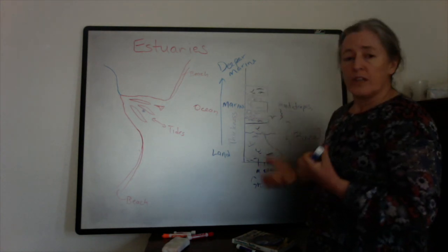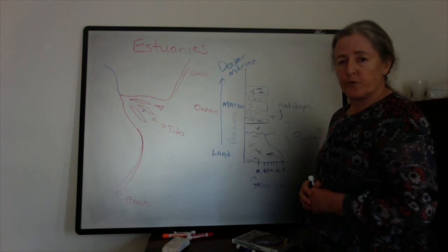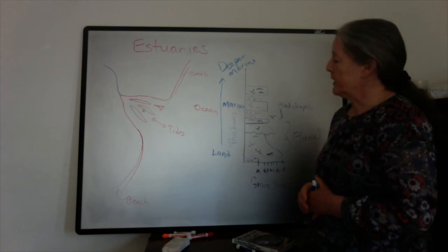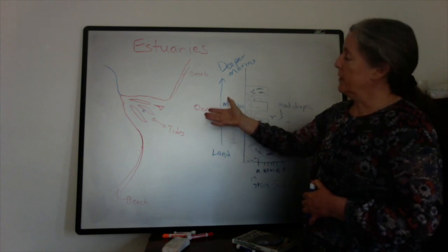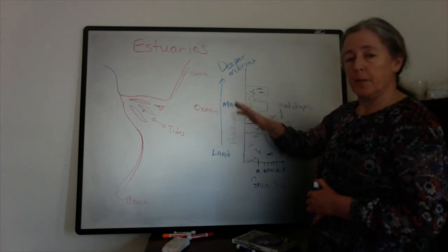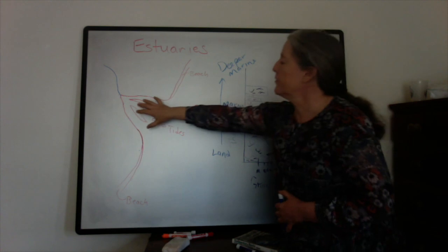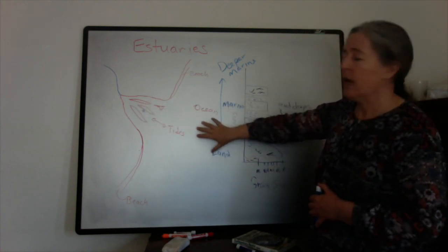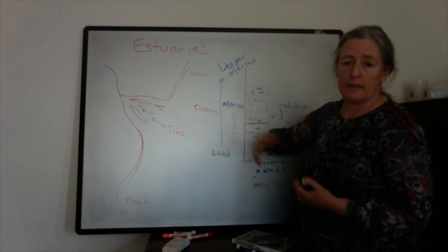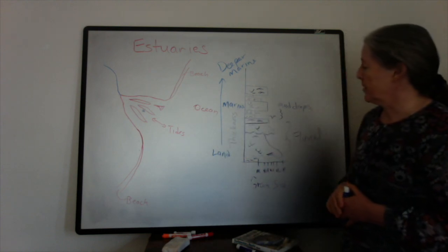So deltas and estuaries can transfer back and forth between each other. Estuaries almost always form when sea level is rising. But if it falls again, the river will extend out towards the ocean again and it could start building a delta on top of the estuary.